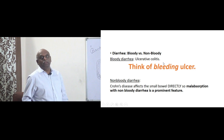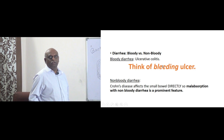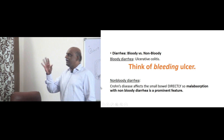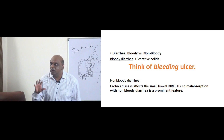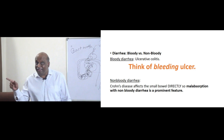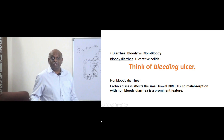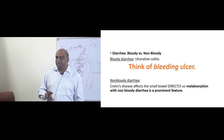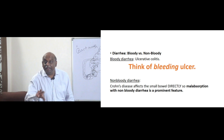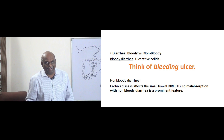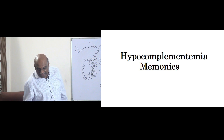How will you remember which is bloody diarrhea — whether it is there in ulcerative colitis? Very simple. Ulcerative colitis is only mucosal involvement because it is a mucosal ulcer — mucosal ulcers bleed. That is the reason bloody diarrhea is a feature of ulcerative colitis. In the case of Crohn's, it directly affects the ileum, leads to malabsorption and diarrhea, but it is not bloody diarrhea like the one you see in ulcerative colitis.